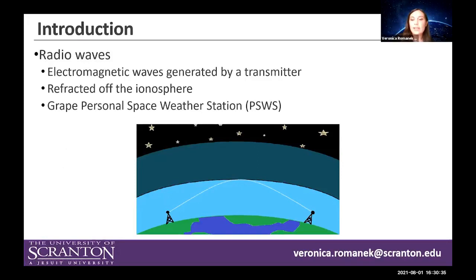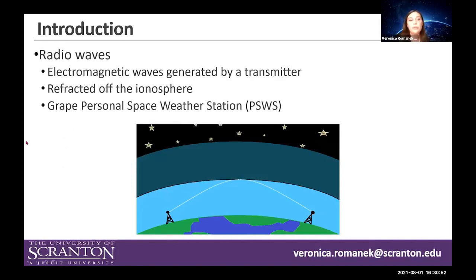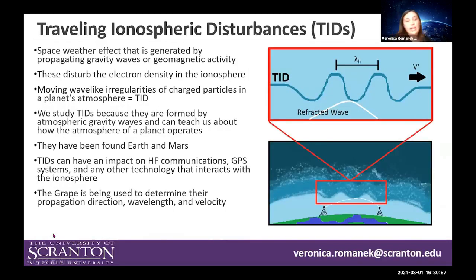In order to understand what we're doing here, it's important to have a good understanding of radio waves. Radio waves can be defined as a type of electromagnetic wave generated by a transmitter. They're able to refract off of the ionosphere and can be received by receivers such as the GRAPE personal space weather station. Because radio waves interact with the ionosphere, that makes them a great tool to study the ionosphere.